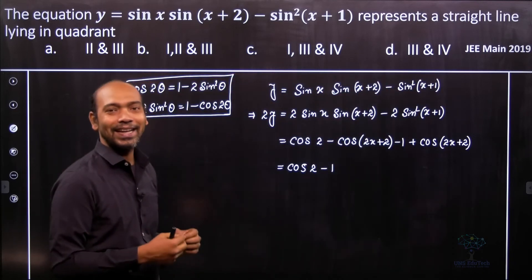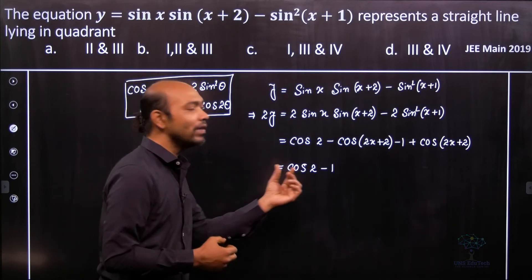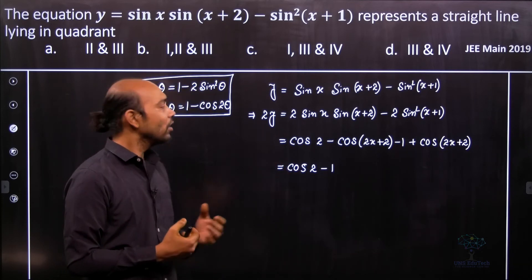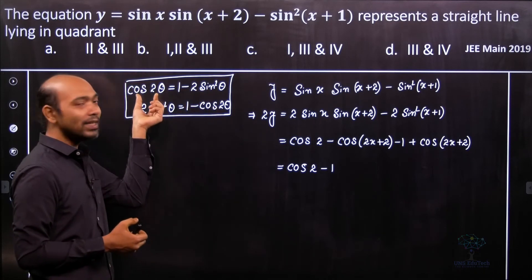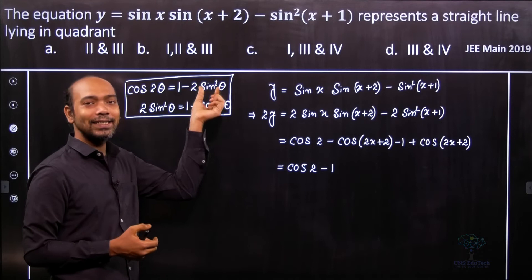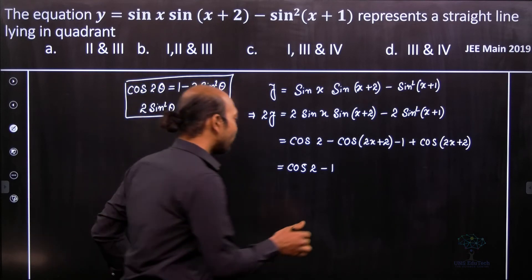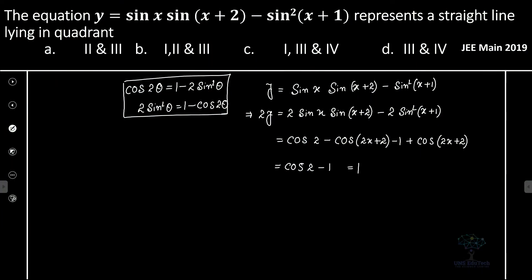But we're still not able to identify what the simplification is, whether it's positive or negative. Based on positive or negative only can we identify which quadrant it lies in, so we need to simplify further. Using cos 2θ = 1 - 2 sin²θ, we get cos 2 = 1 - 2 sin²1.